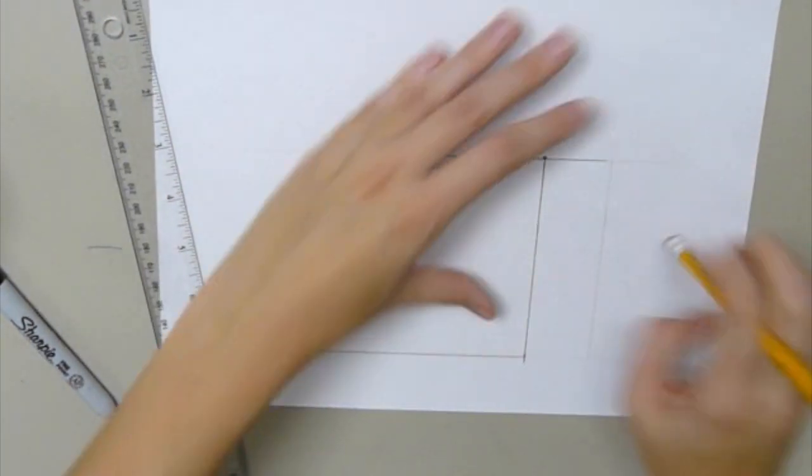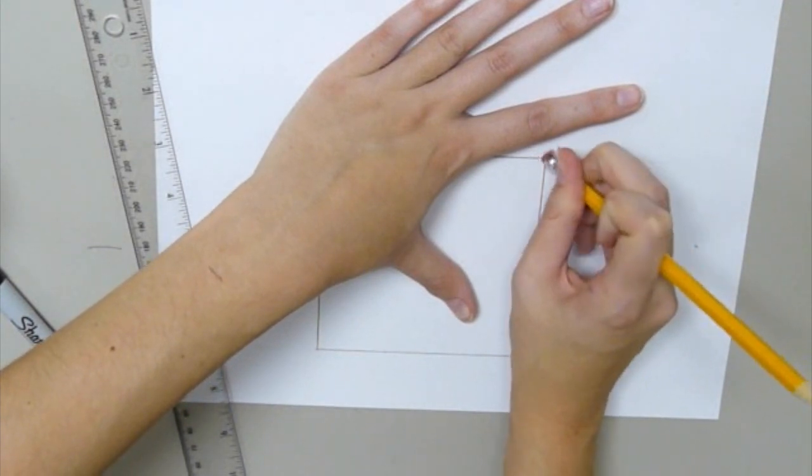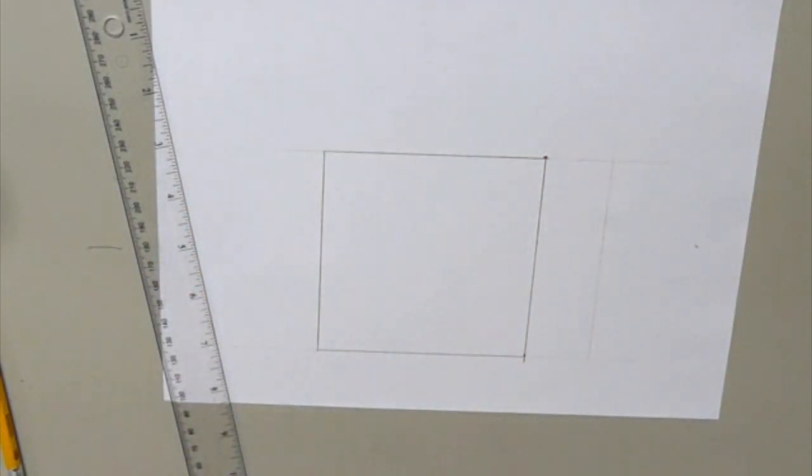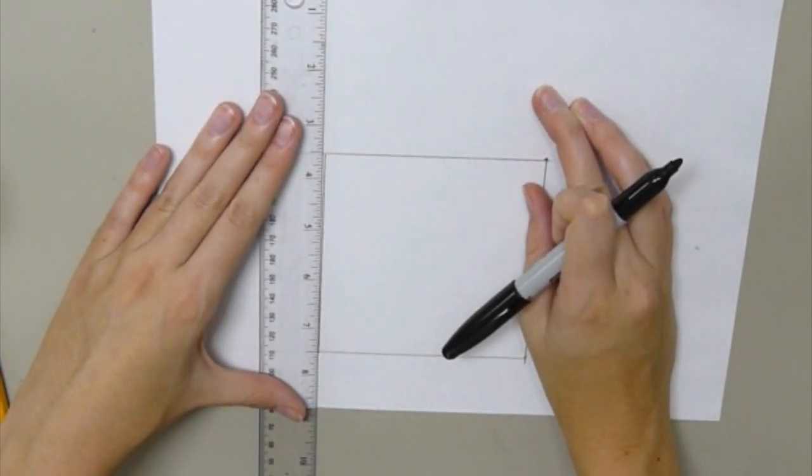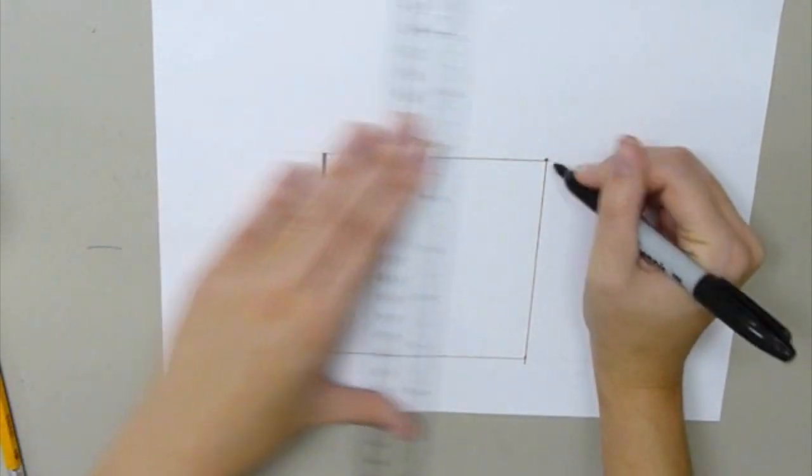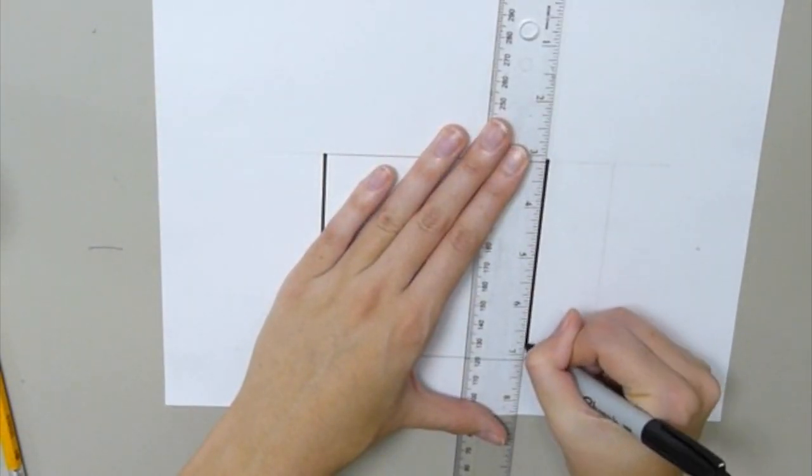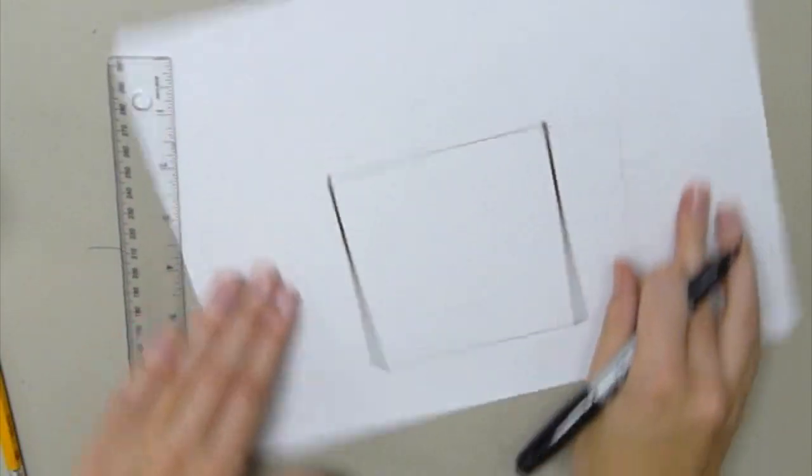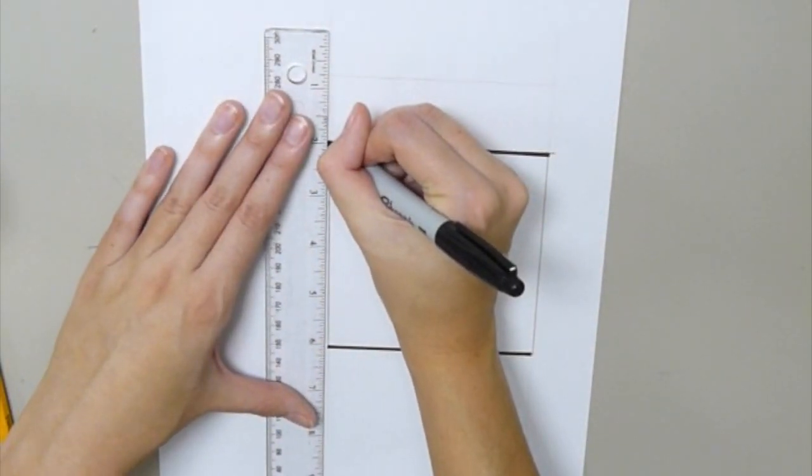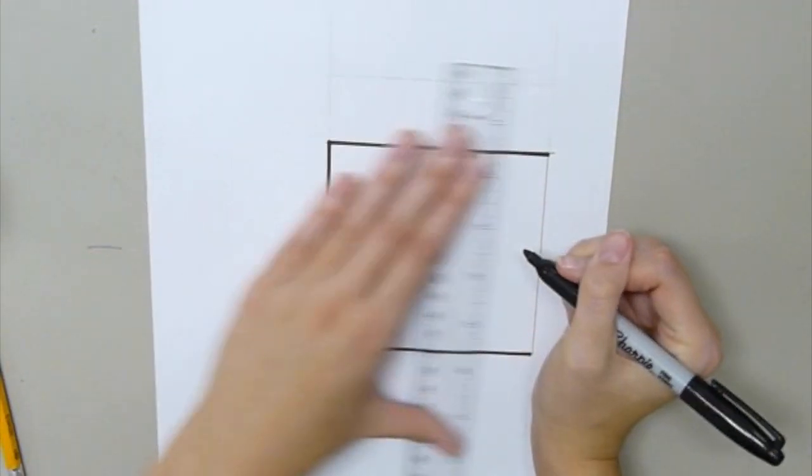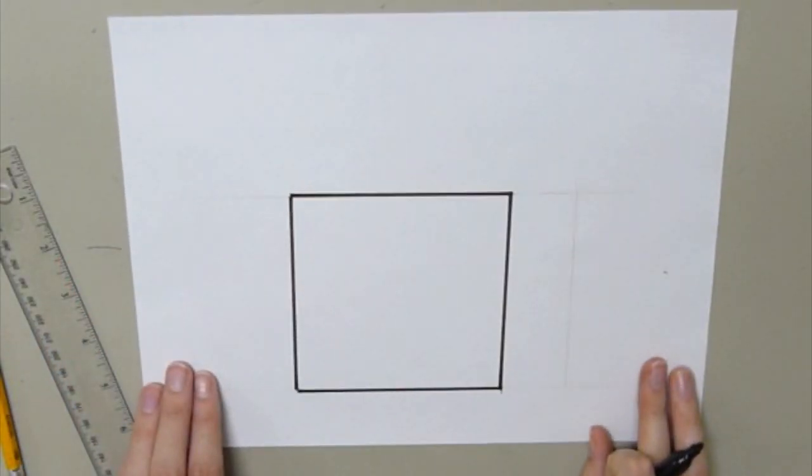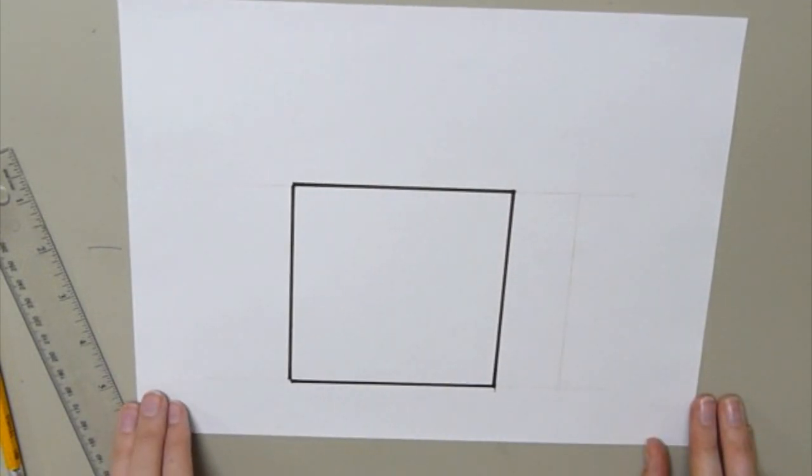Again, it doesn't have to be perfect, but now I take my sharpie, I line up my ruler to all of my edges, and I draw over them. I like to turn my paper, make it easier on me. So here I have my square.